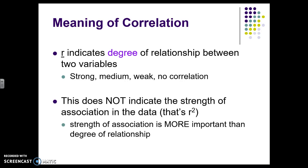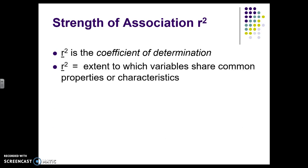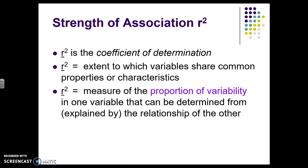The strength of that association is the R squared, which is literally taking the R and squaring it. So the R squared is also called the coefficient of determination. It is the extent to which the variables share common properties or characteristics. So if we think back to those circles, it is how much of the circle is overlapping. That is the R squared.